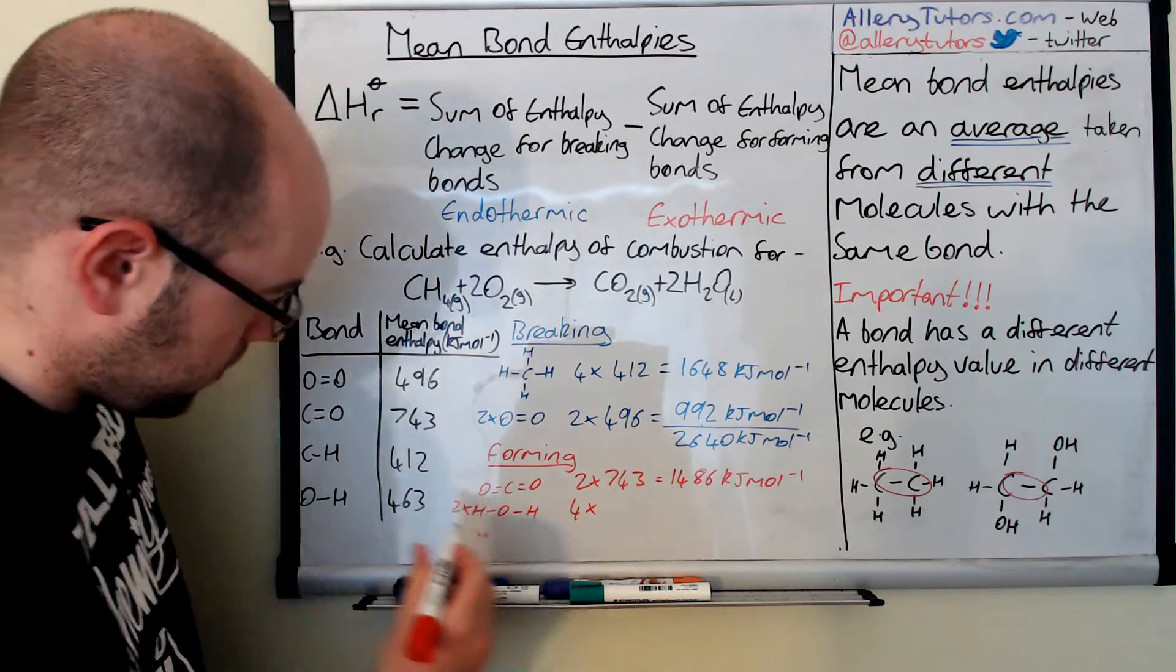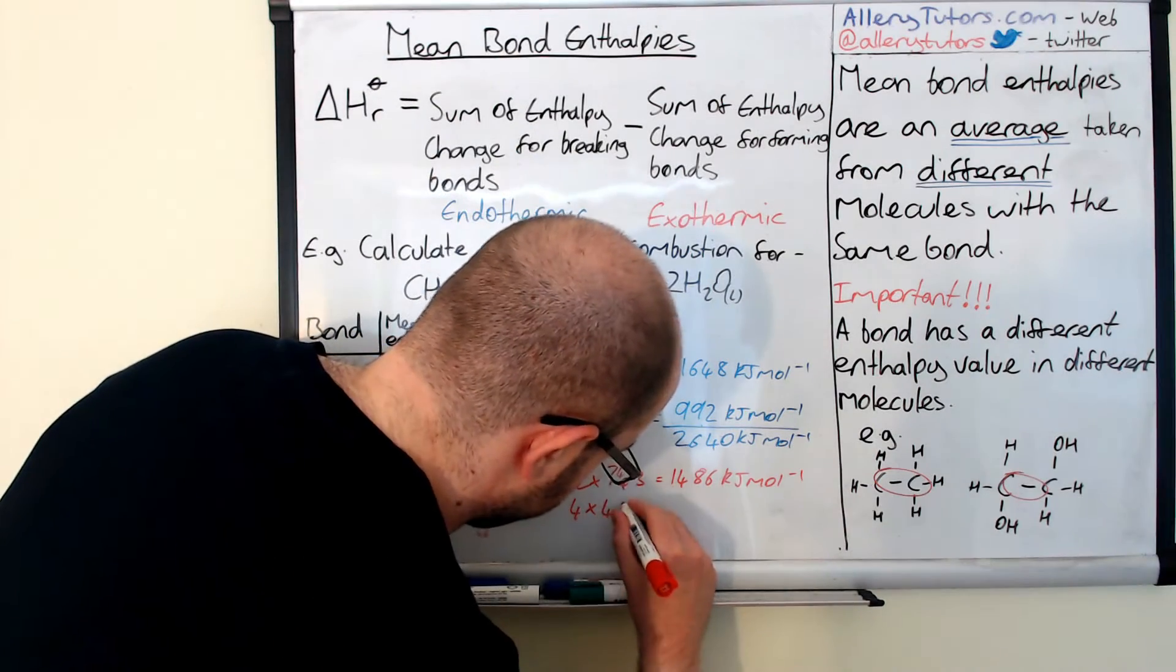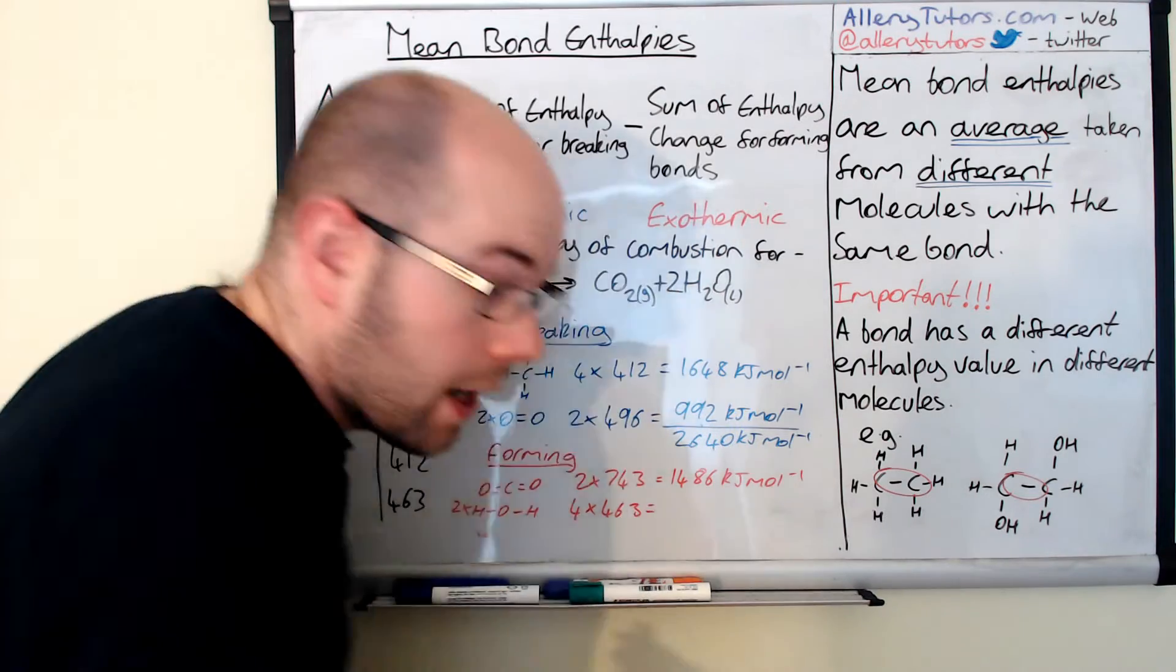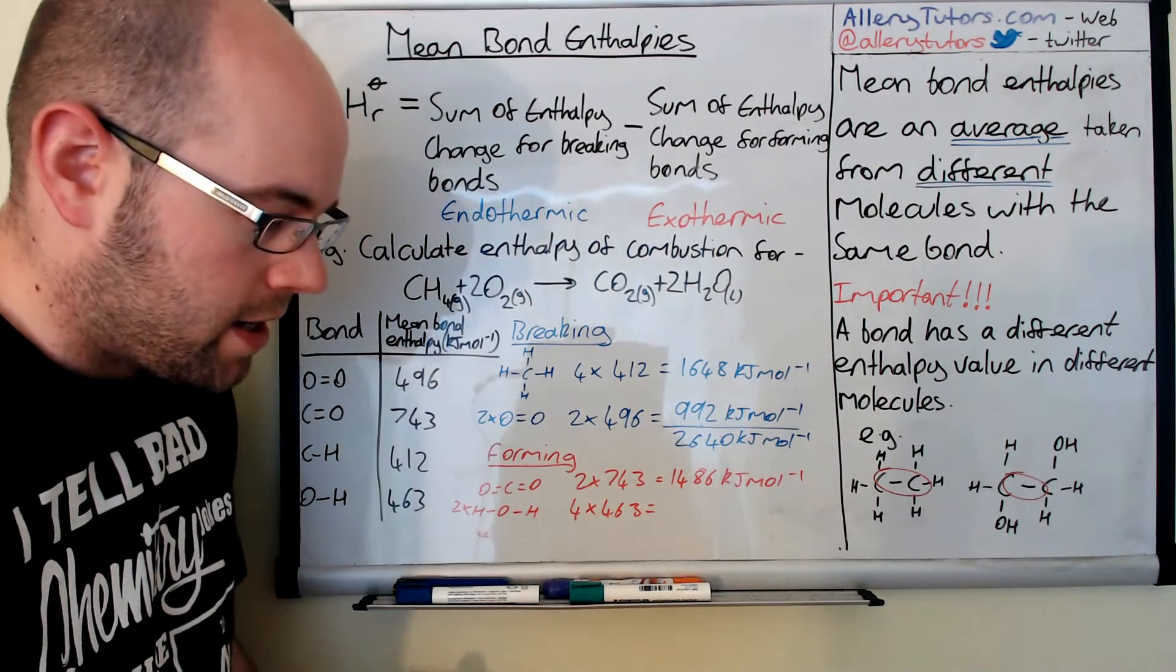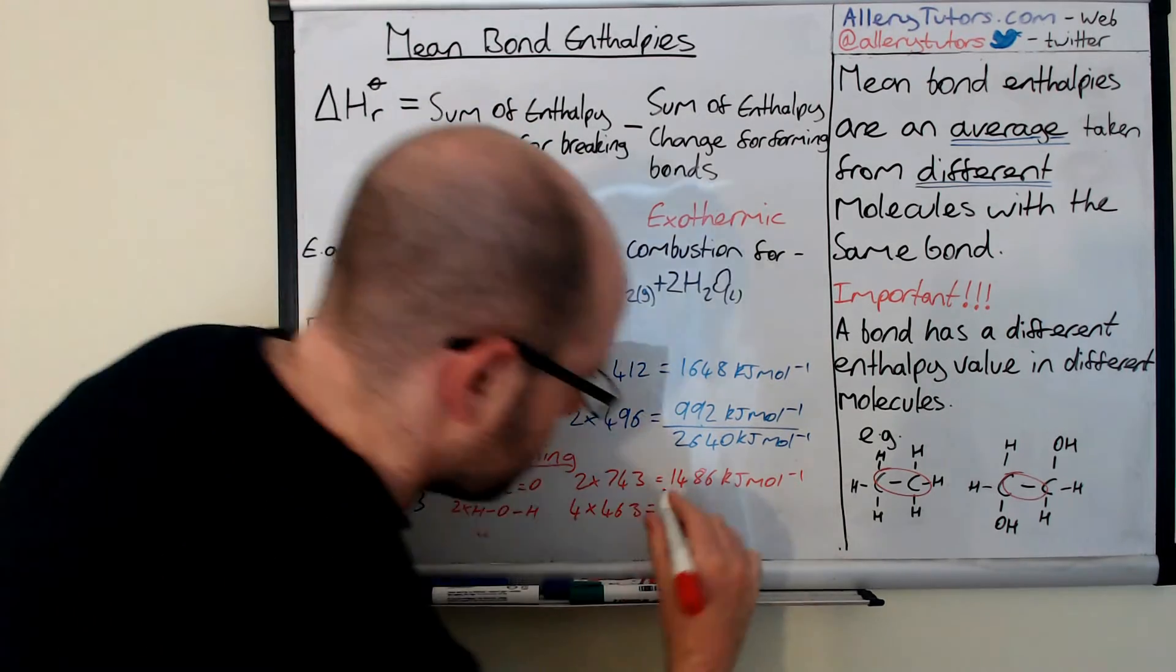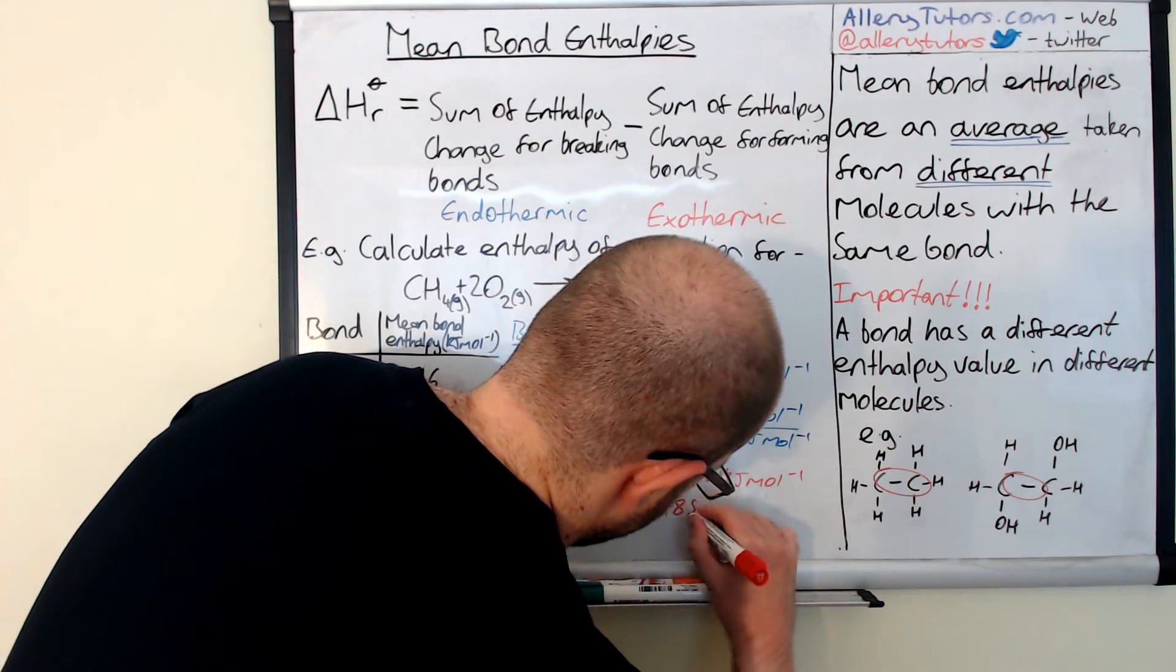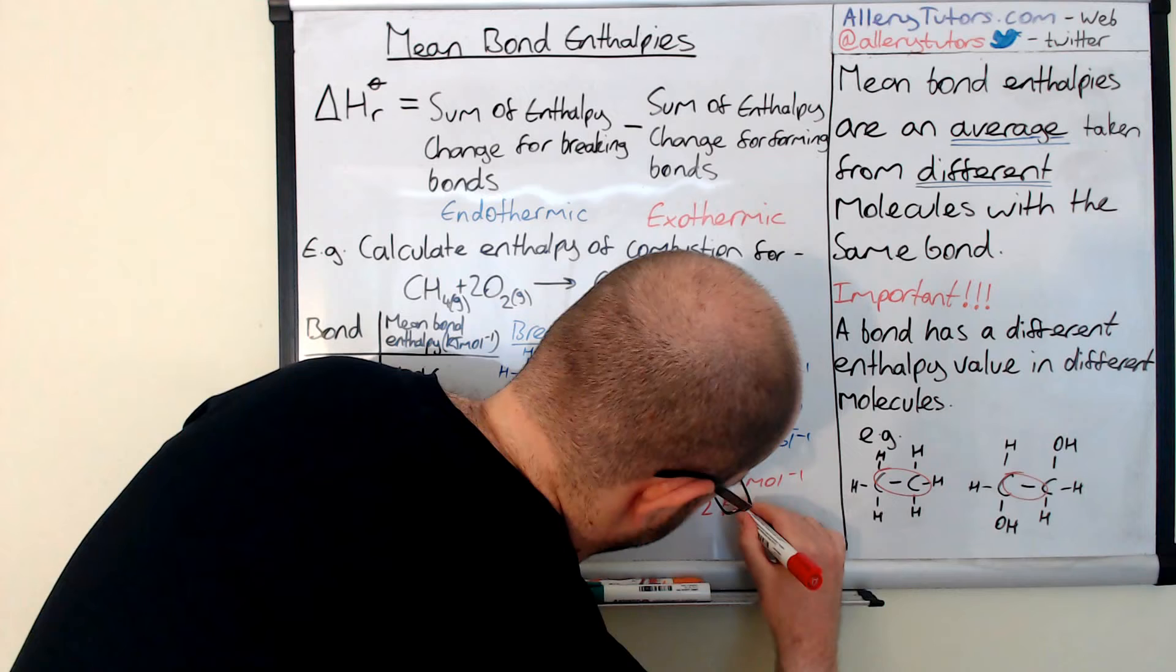Now O-H is 463, so that's going to be four lots of 463. If we put that in our calculator we should get a value of 1852, and that is in kilojoules per mole.